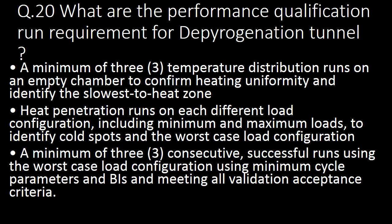Next important question: what are the performance qualification run requirements for depyrogenation tunnel? A minimum of three temperature distribution runs on an empty chamber to confirm heating uniformity and identify the slowest two heat zones. Second, heat penetration runs on each different load configuration including minimum and maximum loads to identify cold spots and worst-case load configuration. Third, a minimum of three consecutive successful runs using worst-case load configuration, minimum cycle parameters and biological indicators, meeting all validated acceptance criteria.